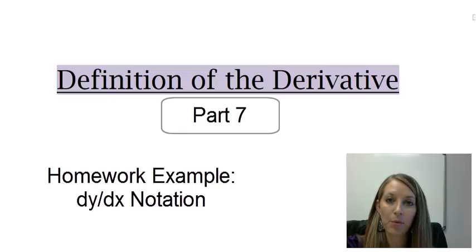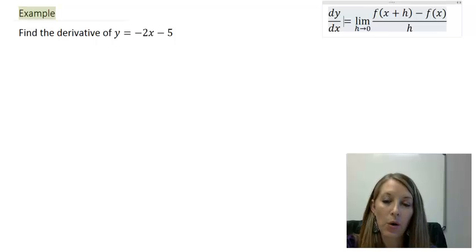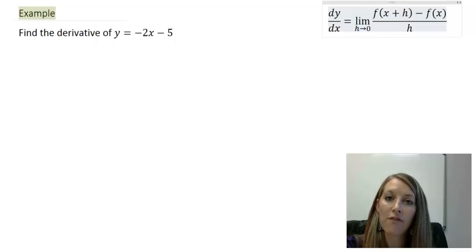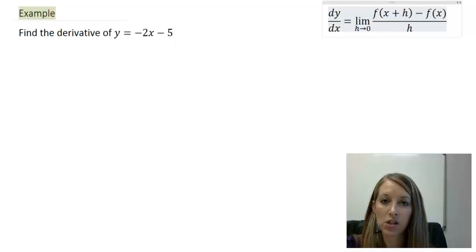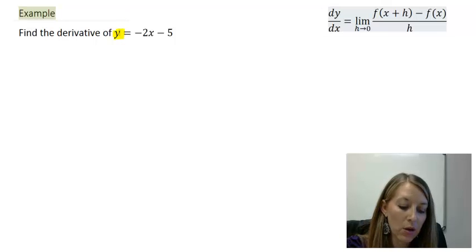Moving on to my last example of finding the derivative. This example is y equals negative 2x minus 5. Of course the first step is to find the derivative. Now I want you to make a note about the notation here. Every other example has given us function notation: f of x, g of x, h of x, and so on. This is just in equation format where we have y equals.